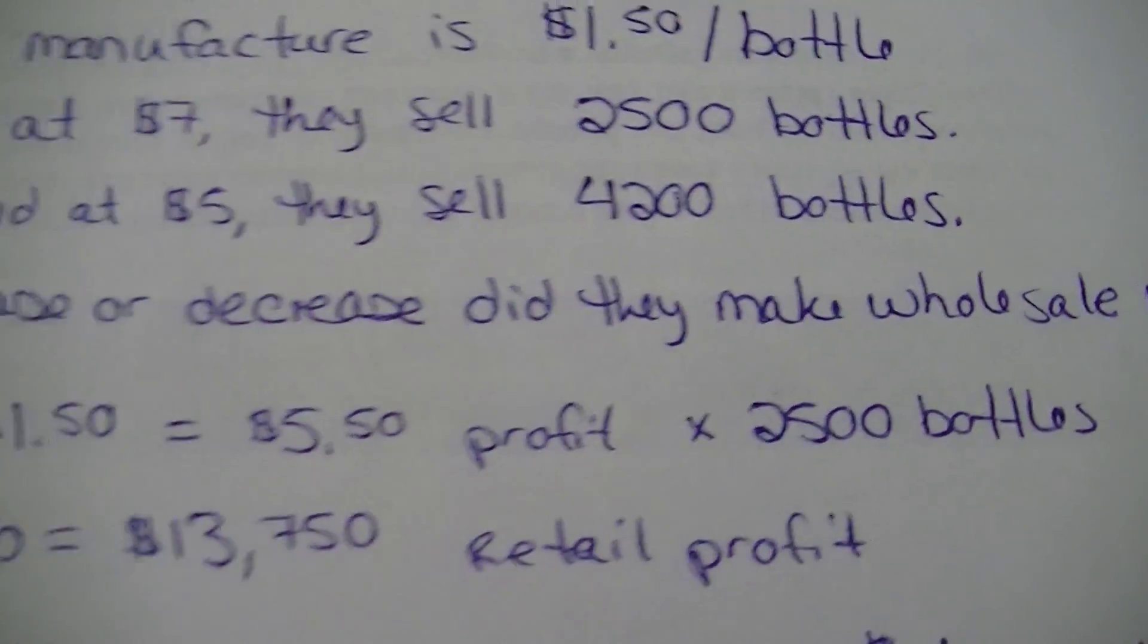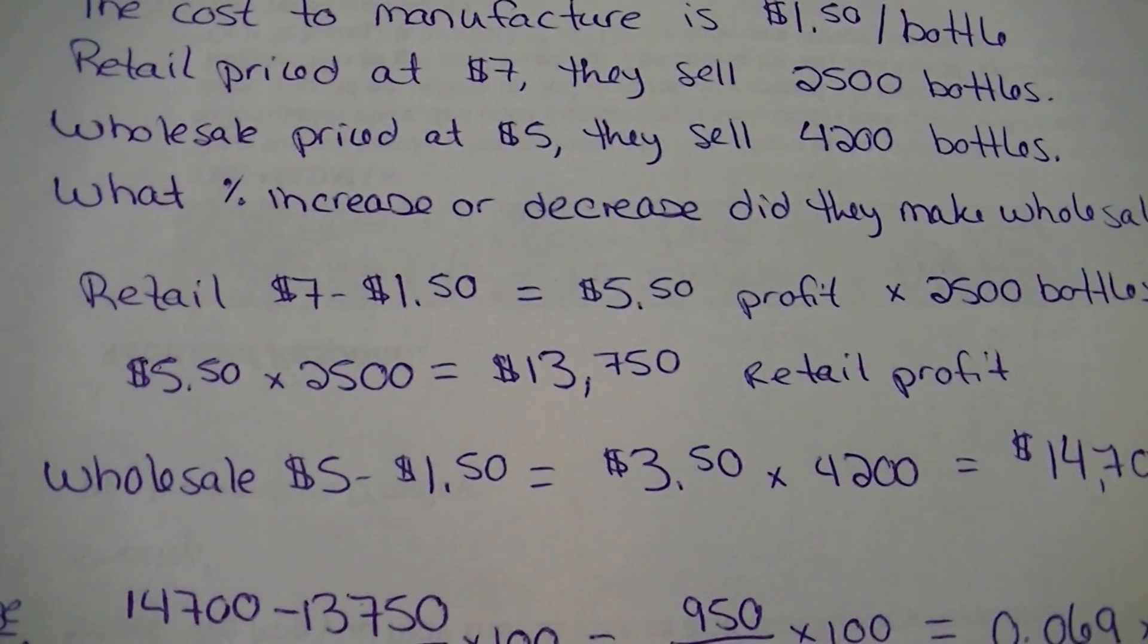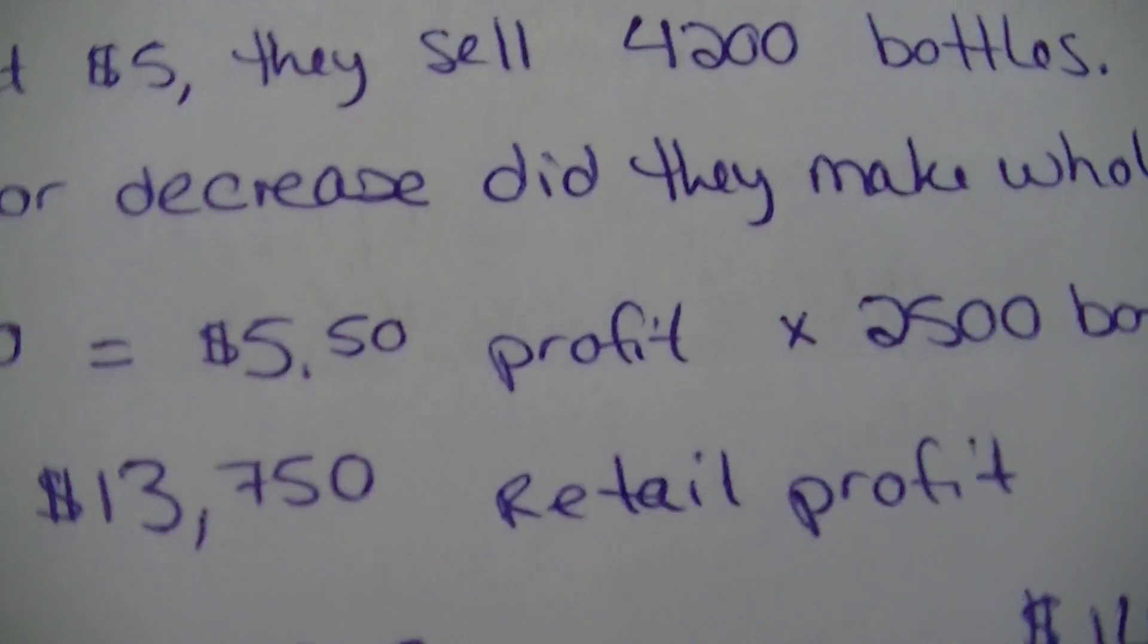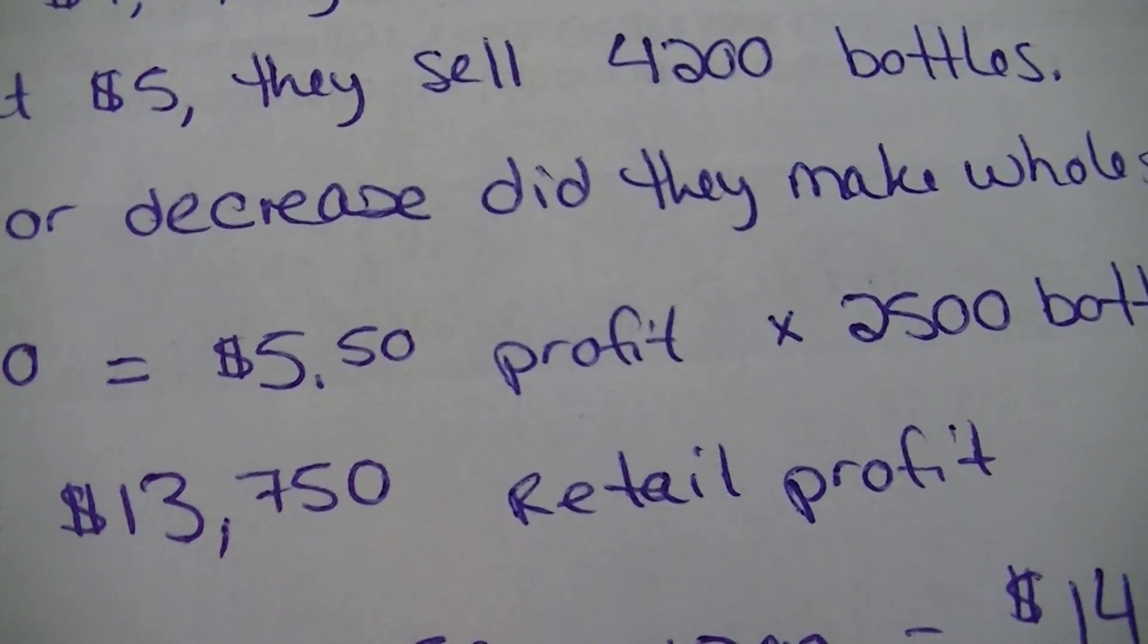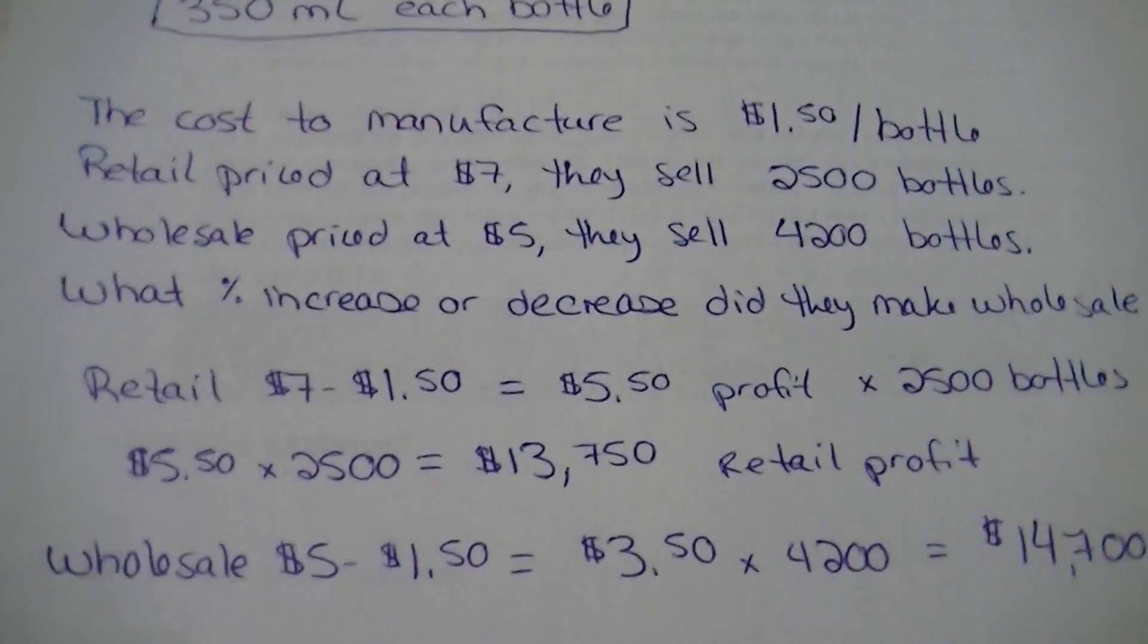So we're just going to multiply those two. So when we say our profit of $5.50 times 2,500, we find that there's a retail profit of $13,750 when they do it retail.